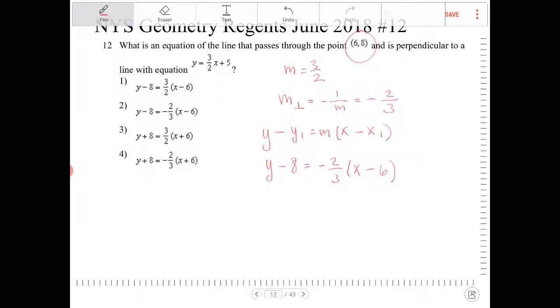And the options, all the options, are equations of lines expressed in point-slope form. So the one that matches the answer that we have here is option 2.